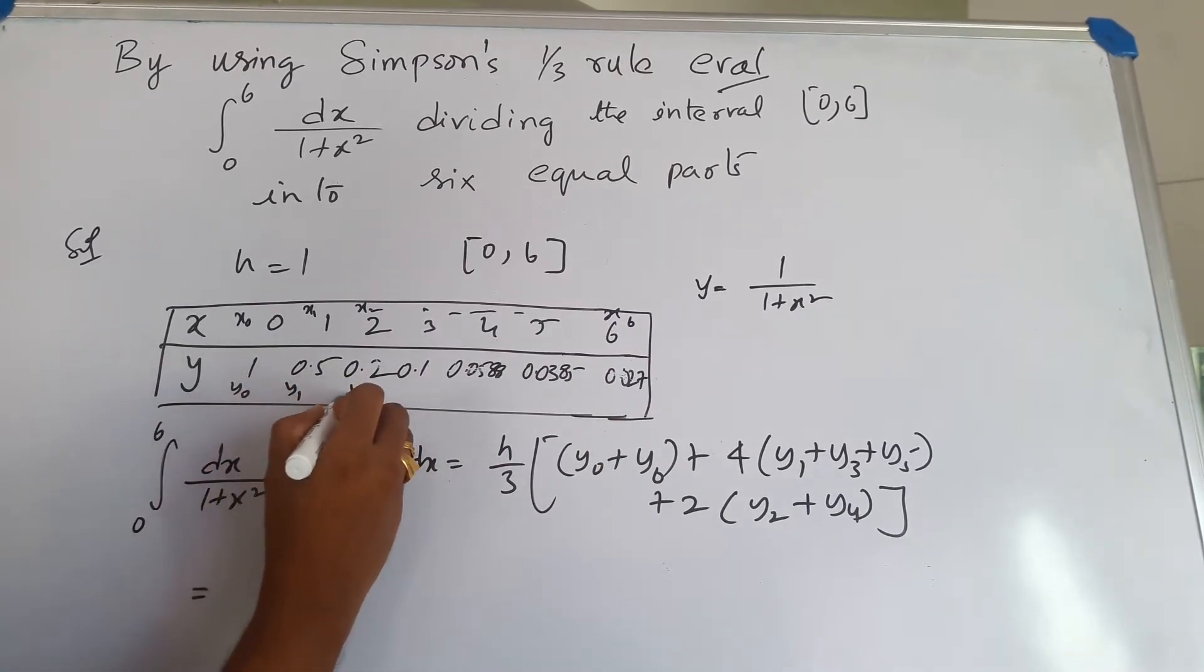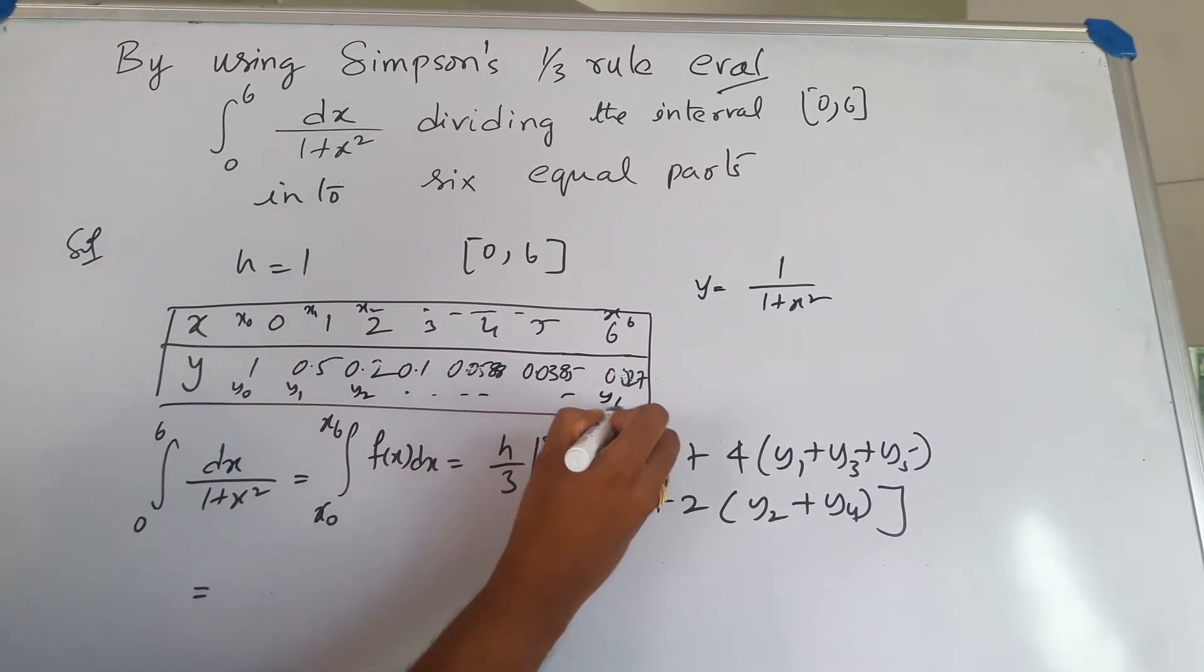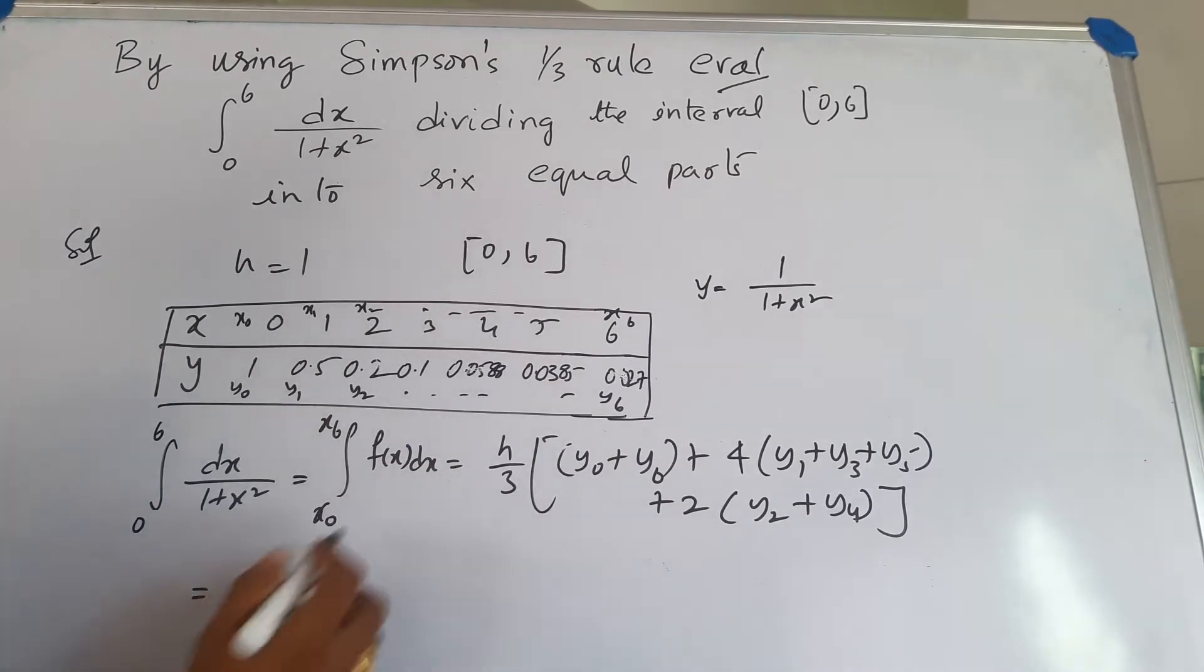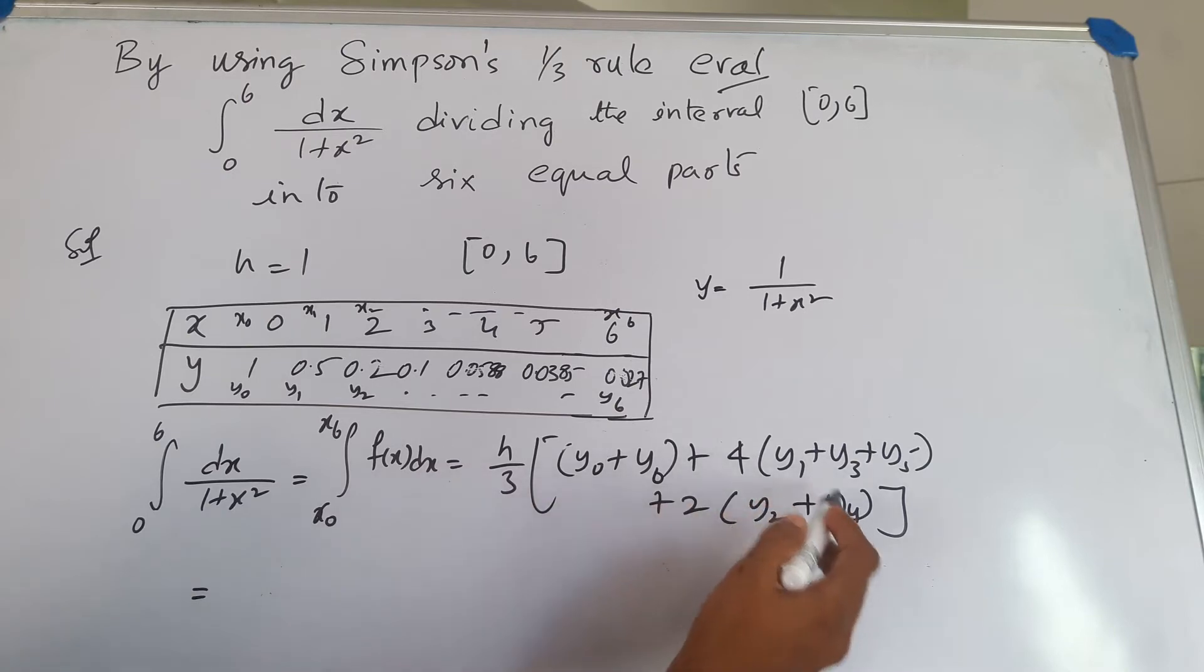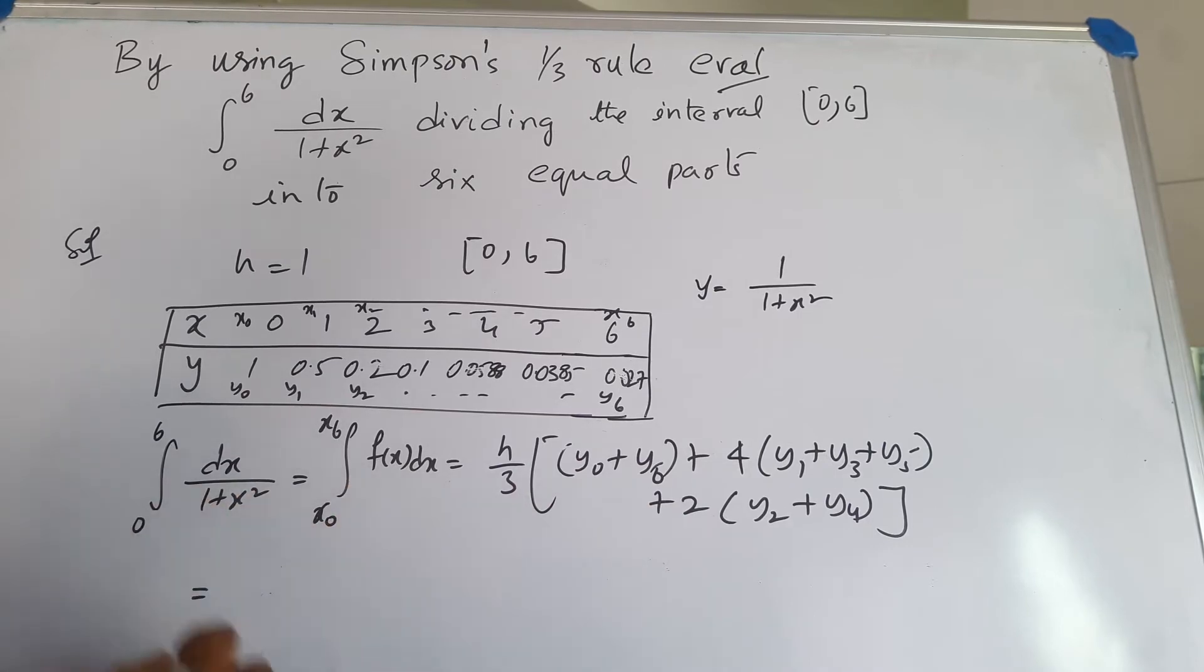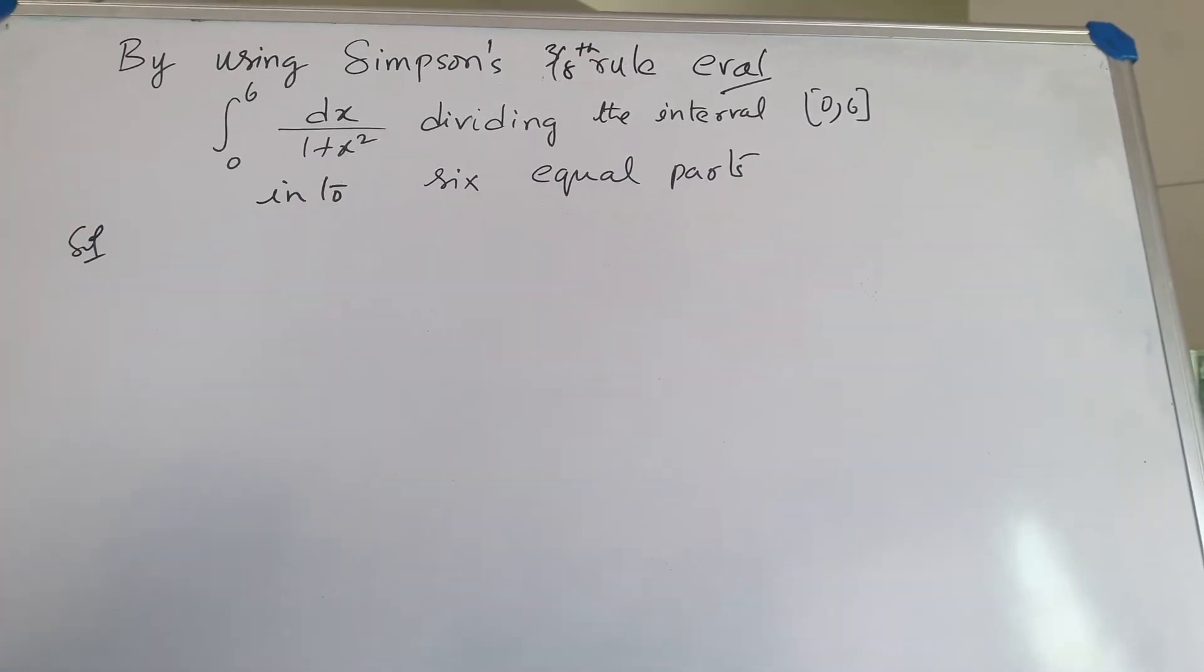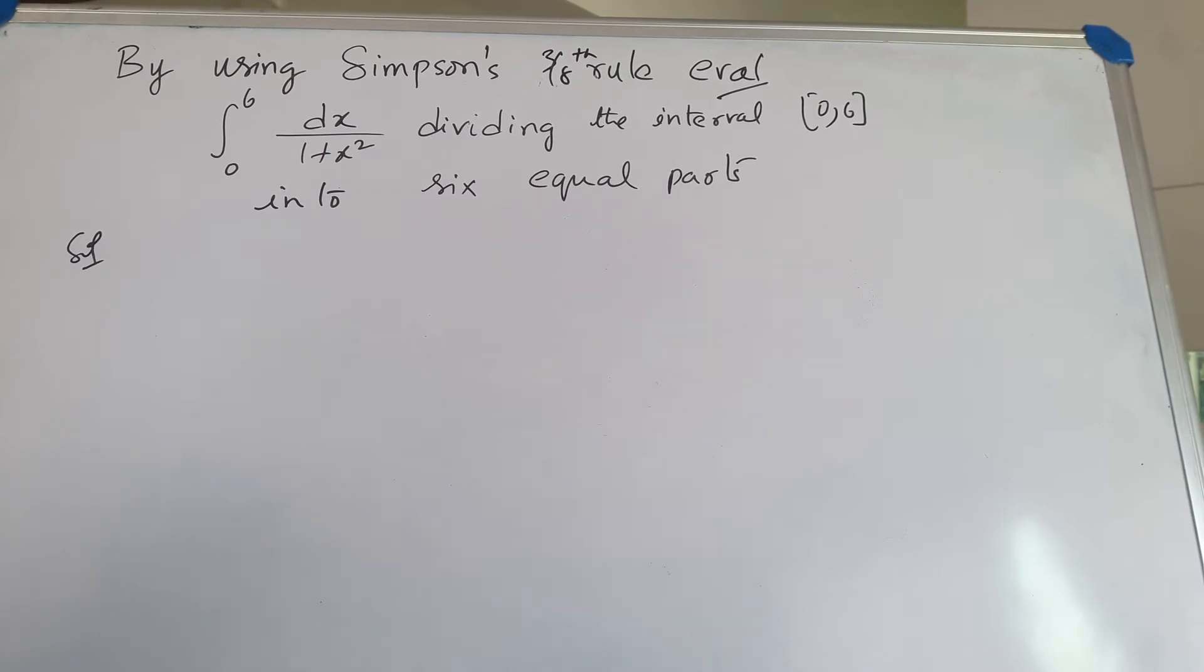Substitute this in the formula. This is the formula for Simpson's 1/3 rule: substitute h and the y0, y1, y3, and so on. After substituting all these values and simplifying, you get 1.3662.